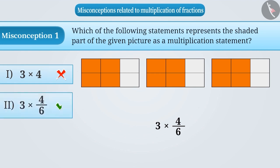Hence, the correct answer is option 2. It is important to note that there are three complete figures for each of which 4 sixth part has been taken. Therefore, we can also express it as 4 by 6 into 3.